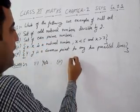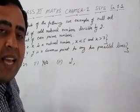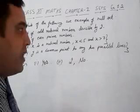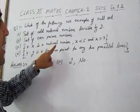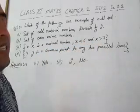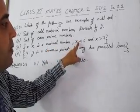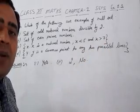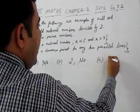We know that 2 is the number which is even as well as prime, therefore no, the second one is not an example of null set. The third part is: x such that x is a natural number, x is less than 5 and x is greater than 7. A number cannot be both less than 5 and greater than 7 simultaneously, so it is not possible, therefore yes, it is also an example of null set.